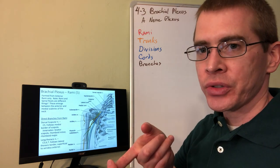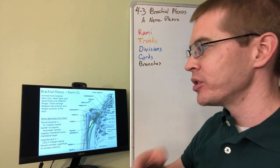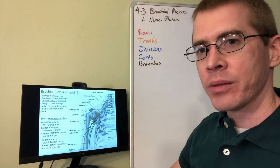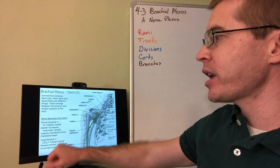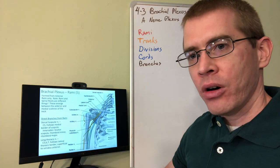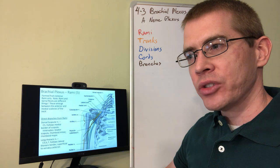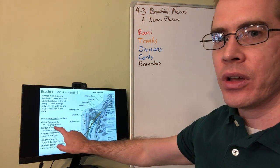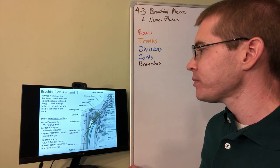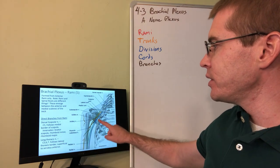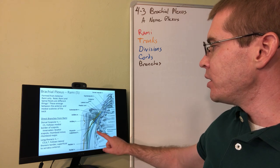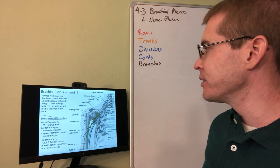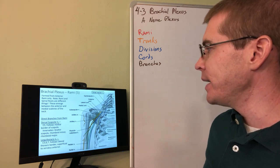You need to now know the muscles that are innervated by these branches. For instance, dorsal scapular nerve innervates some of the superficial back muscles, the levator scapulae and the rhomboids. So now you know that these muscles are innervated not just by anterior rami, but you know the specific names of the branches from those anterior rami. Long thoracic nerve travels down the lateral side of the thorax to innervate serratus anterior.